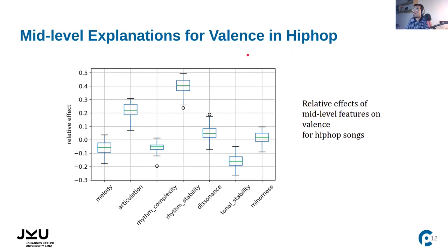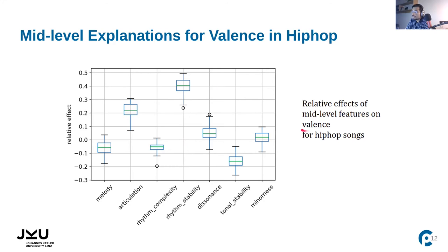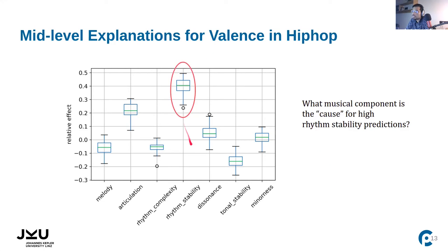Returning to the problem of valence overestimation in hip-hop songs, I have plotted the relative effects of mid-level features on valence for hip-hop songs and for all songs in the PMEMO dataset. The effect of rhythmic stability is quite high, meaning its relative contribution to valence predictions is substantial. Since we have an overestimation of valence, we can further analyze what musical component is causing this peak in rhythmic stability predictions.